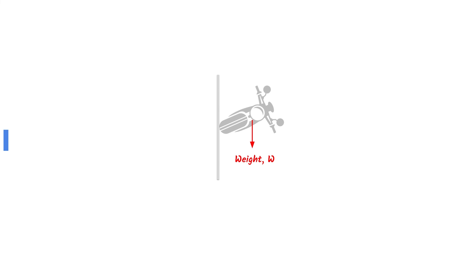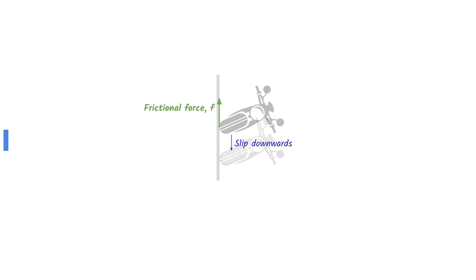Let's go through one force at a time. The weight acts on the center of mass and always points downwards. Normal force is always perpendicular to the surface. Since the surface here is vertical, the normal force is to the right. Frictional force always acts in the opposite direction to the motion. You can imagine that the motorcycle slips downwards if there was no frictional force. Put these forces together to find your answer.